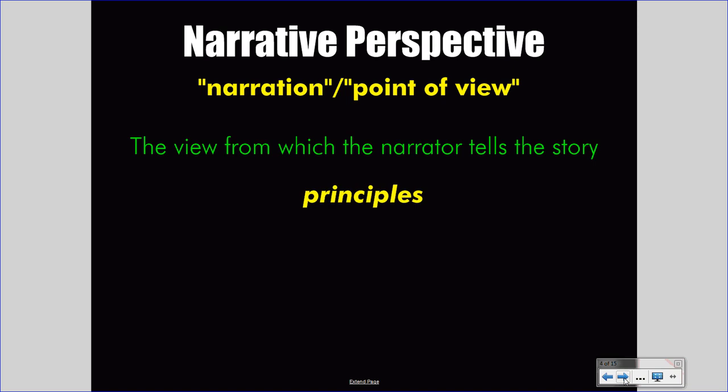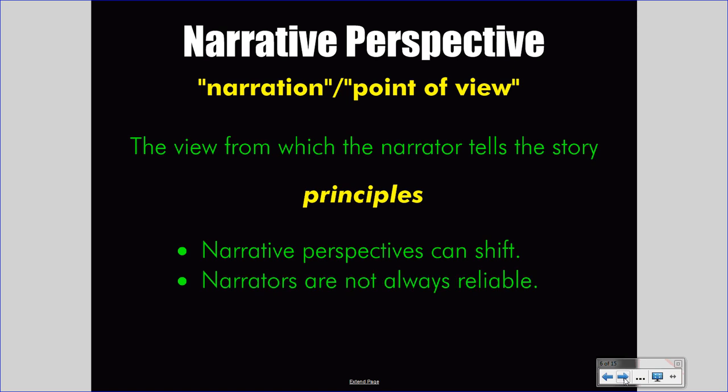Let's note a couple of principles connected to this definition. First, narrative perspectives can shift. An author may use multiple narrative perspectives in a single story. Authors often do this to create more interest and to make the reader question what is true versus what is not. Second, narrators are not always reliable. This can be some of the most interesting literature you will ever read — when you find a narrator that cannot be trusted, that makes you question all the events being told to you and the very world in which you are living through the story.